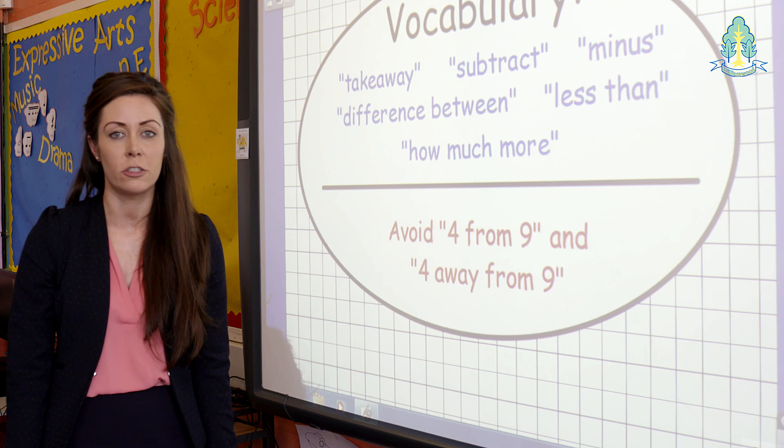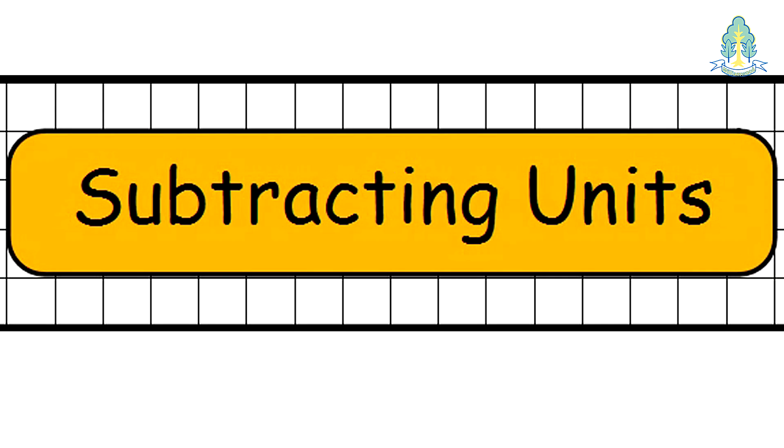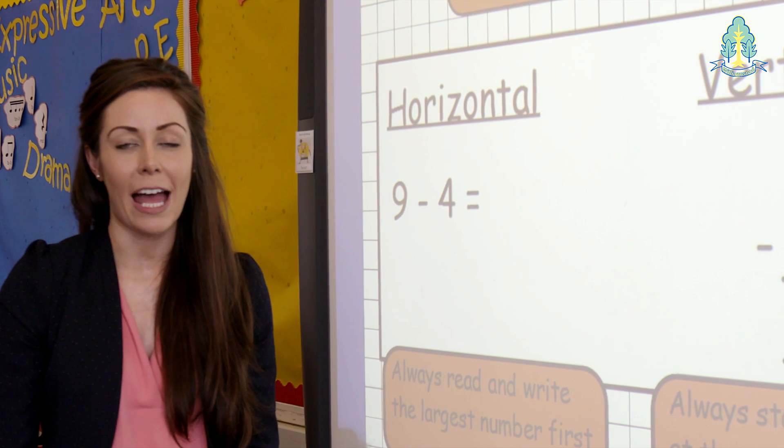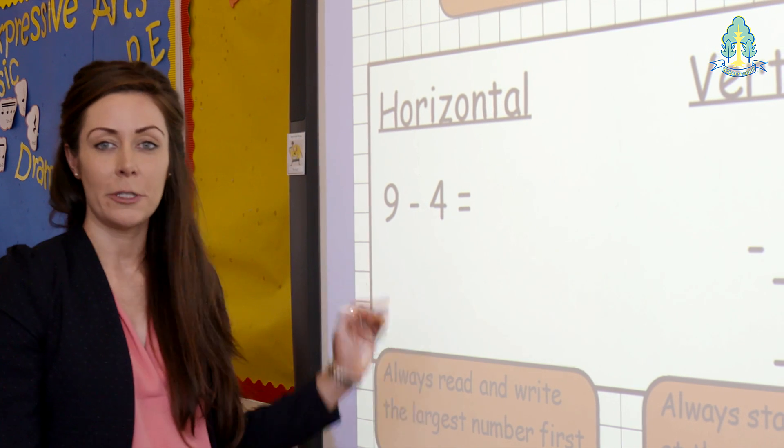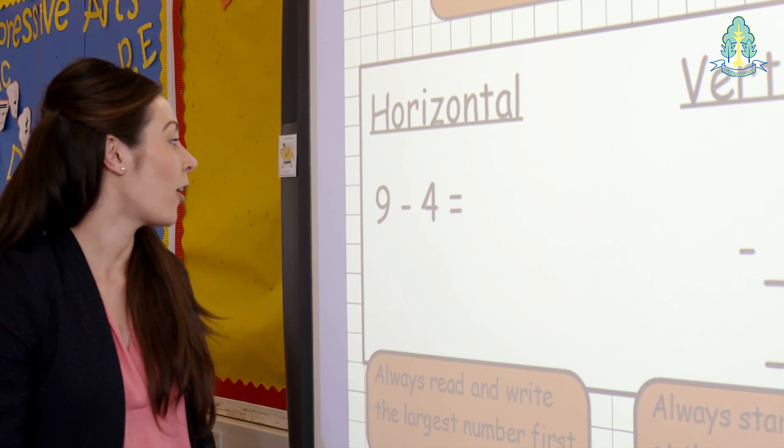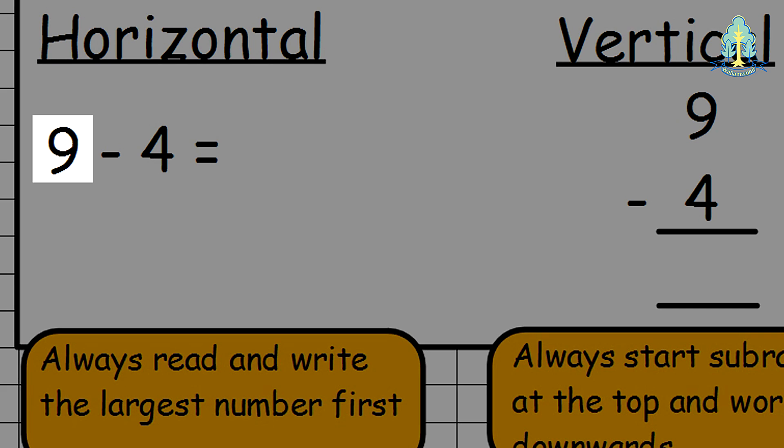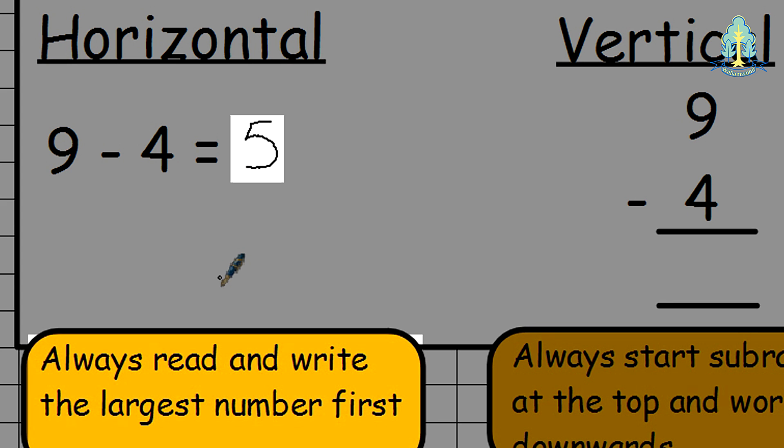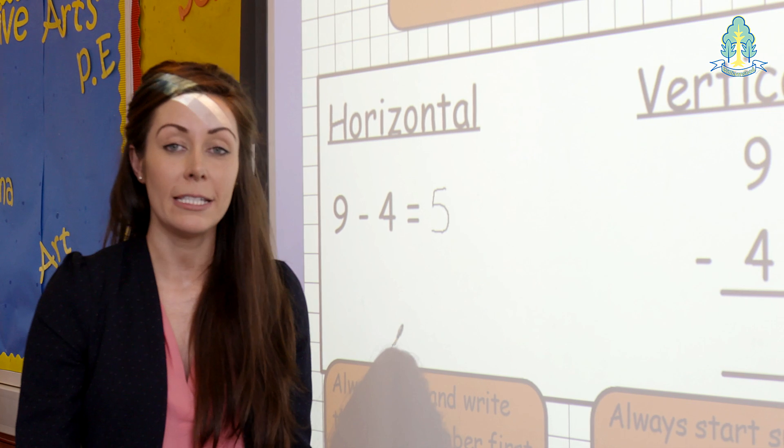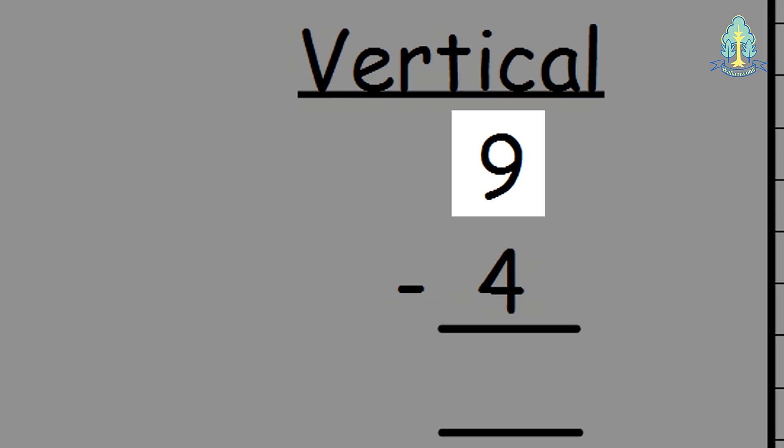Pupils at early and first level learn to subtract units, beginning with horizontal calculations and starting with the largest number first. 9 take away 4 equals 5. They then progress to vertical calculations once again with the largest number first. 9 take away 4 equals 5.